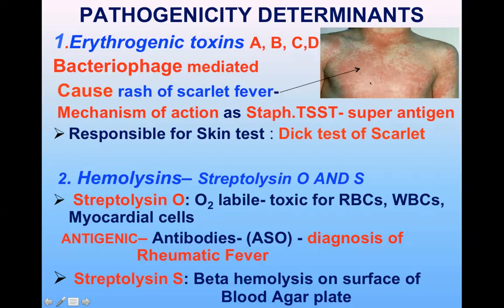The mechanism of erythrogenic toxin is that it acts exactly like the toxic shock syndrome toxin of Staph aureus — as a superantigen causing massive release of cytokines: interleukin-1, interleukin-2, and tumor necrosis factor from macrophages and T lymphocytes.